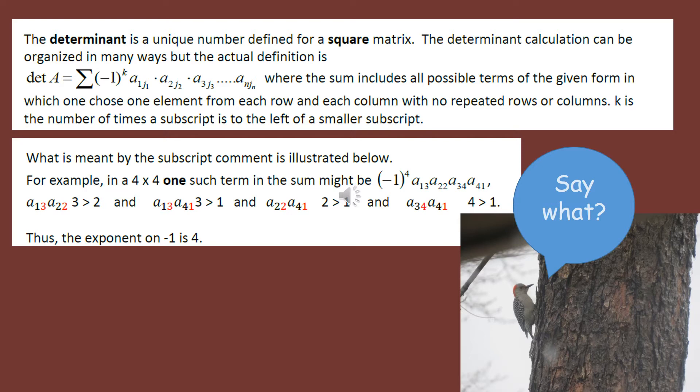It's a calculation that can be organized in many ways, but the definition is that it's the summation of negative one to the k times a-one-j-sub-one times a-two-j-sub-two times a-three-j-sub-three, etc. The a's with subscripts represent the different positions, and again you're creating all products in which the factors are in different rows and different columns.